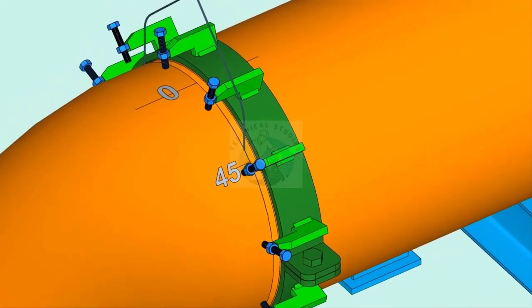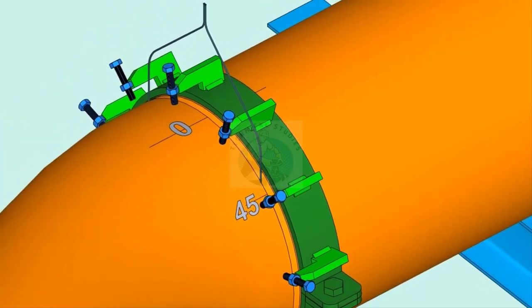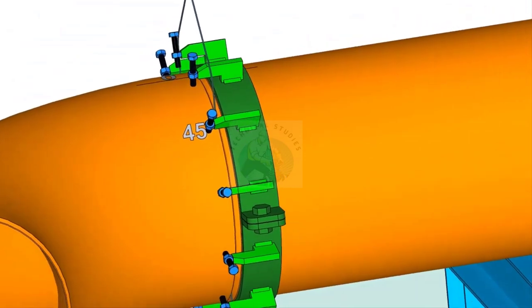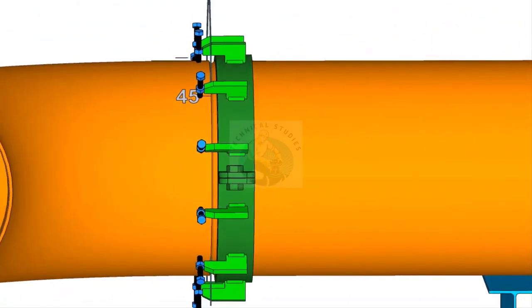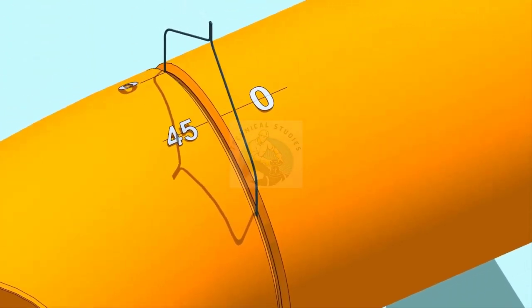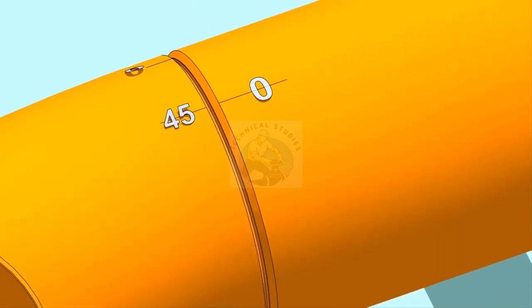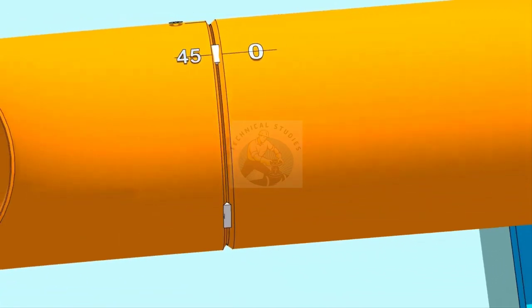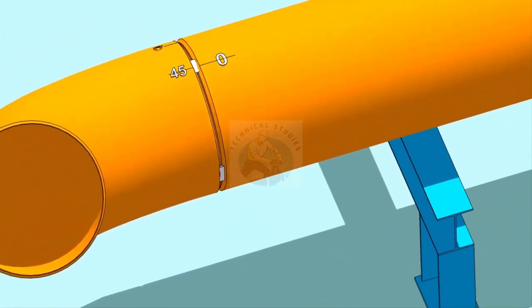Put the gap rod in the joint. Now, slowly rotate the elbow until the 45-degree mark comes opposite to the zero mark on the pipe. Make the joint gap equal all around the joint. Tack weld at the four quarters of the joint.